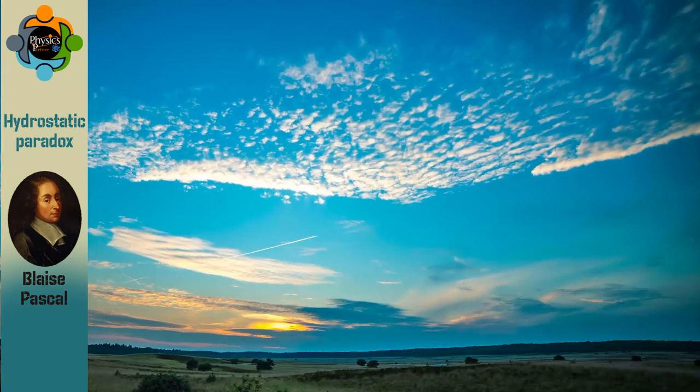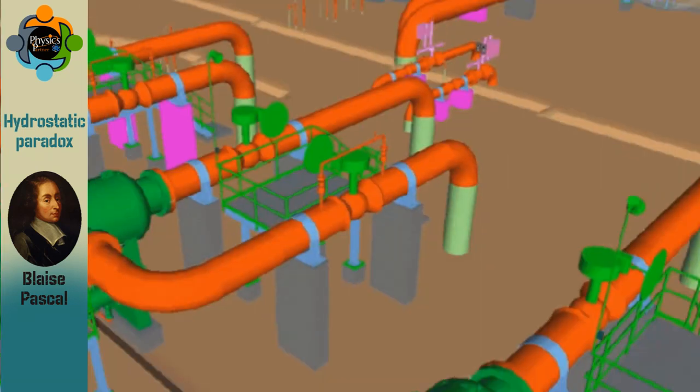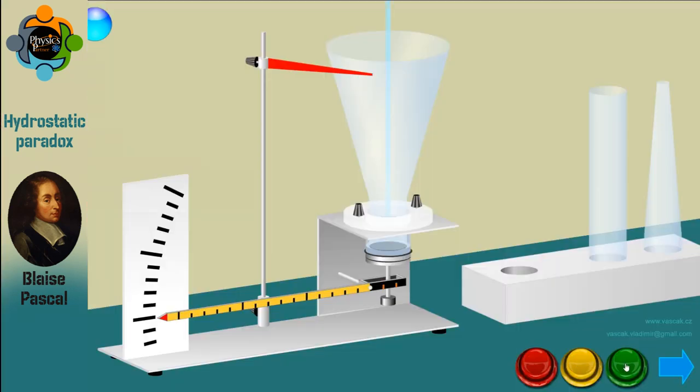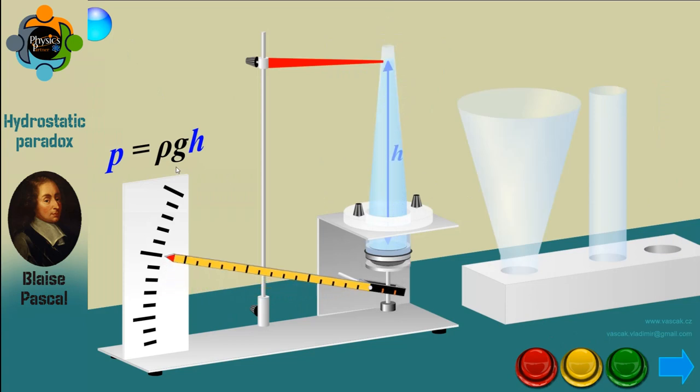Let's go to the conclusion. The hydrostatic paradox is one of the most intriguing phenomena in fluid mechanics. You can see here on the screen the formula: pressure equals ρ times g times h, where ρ is the symbol for density, times gravity, times height.